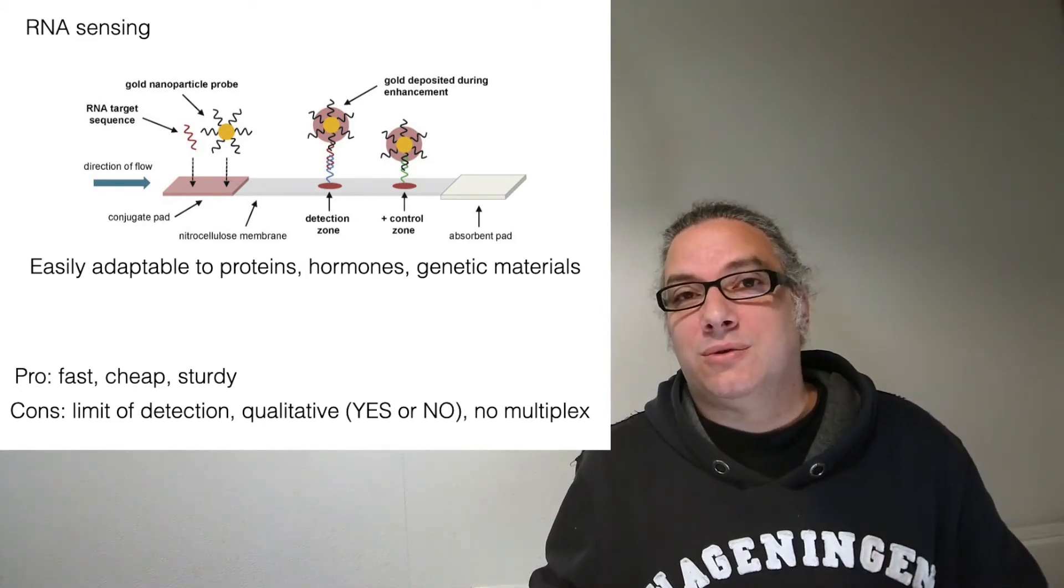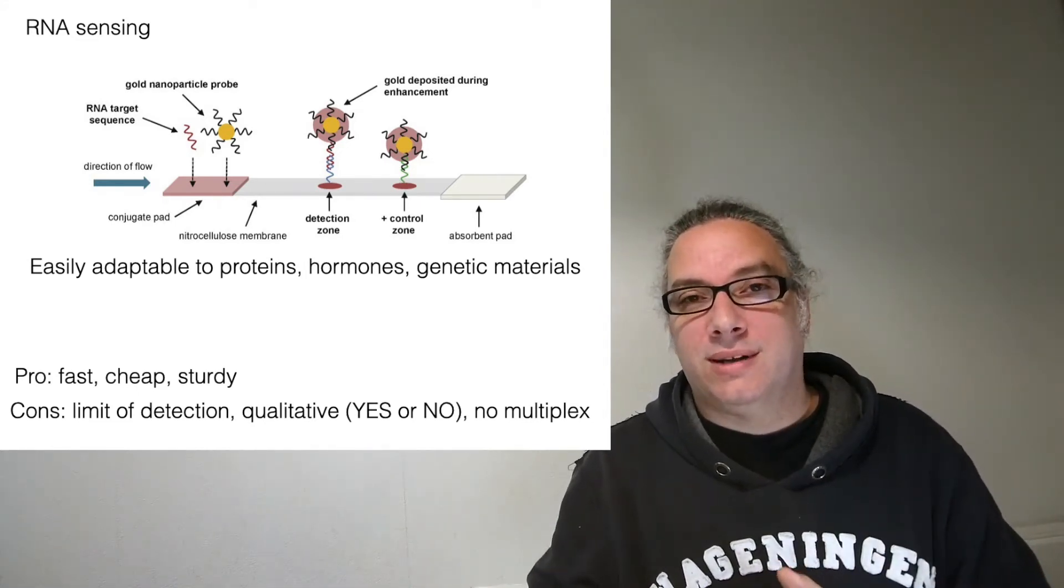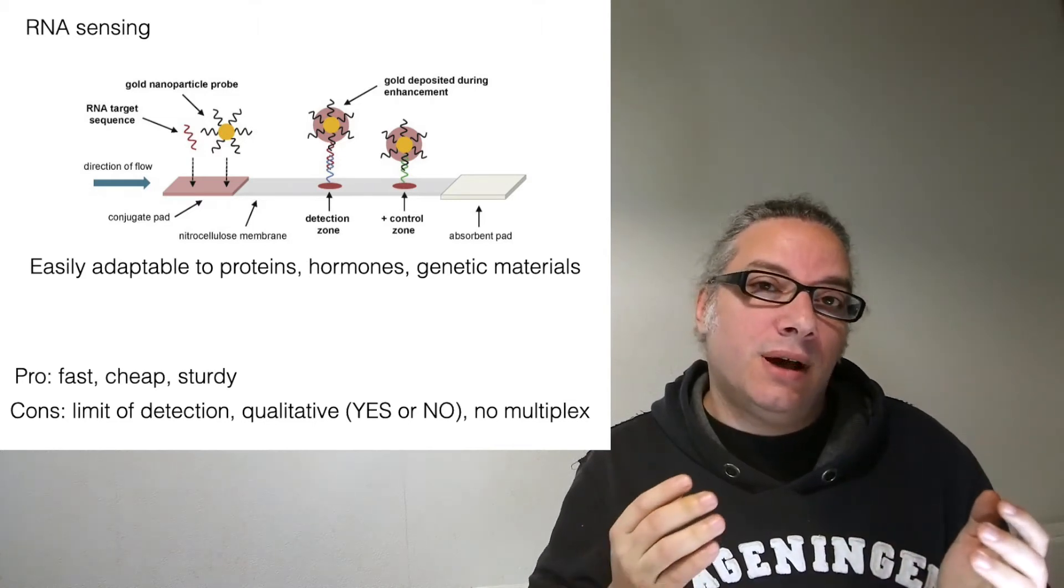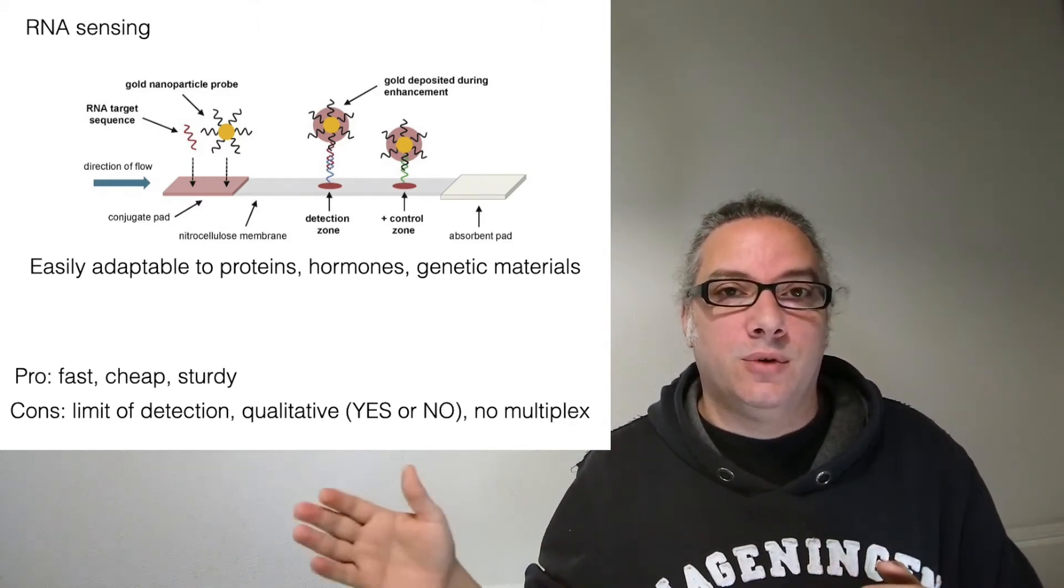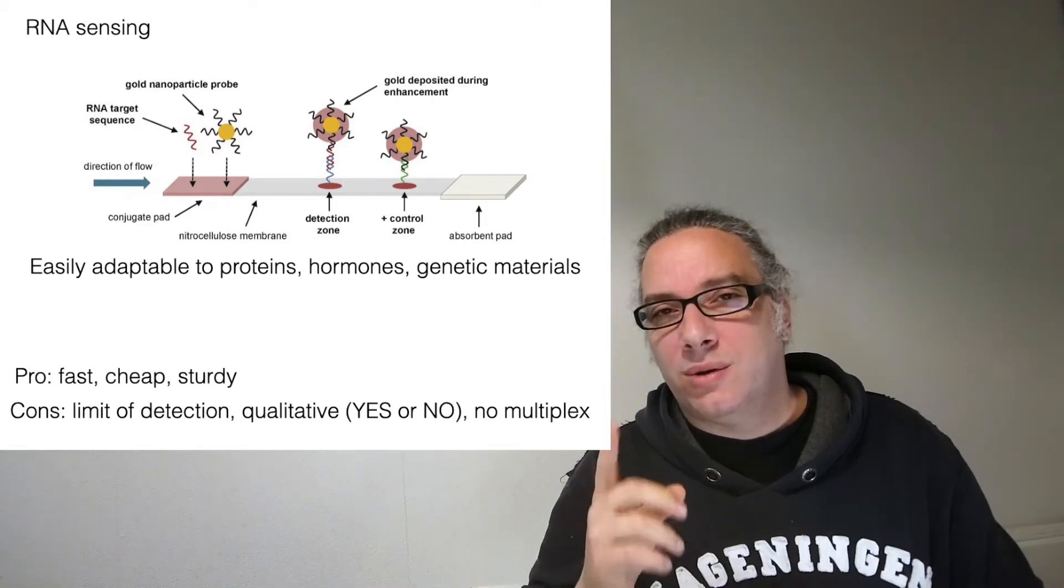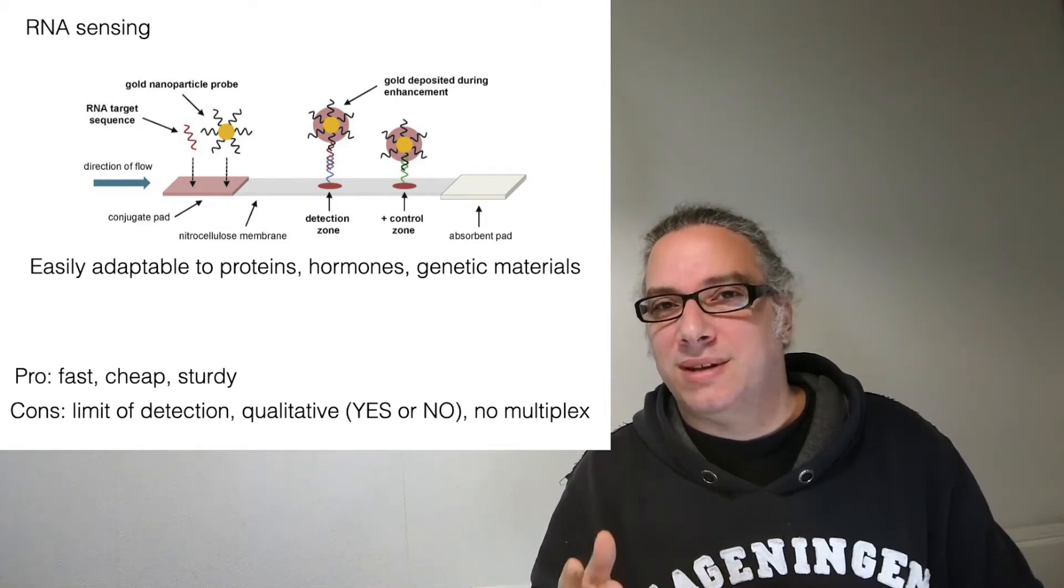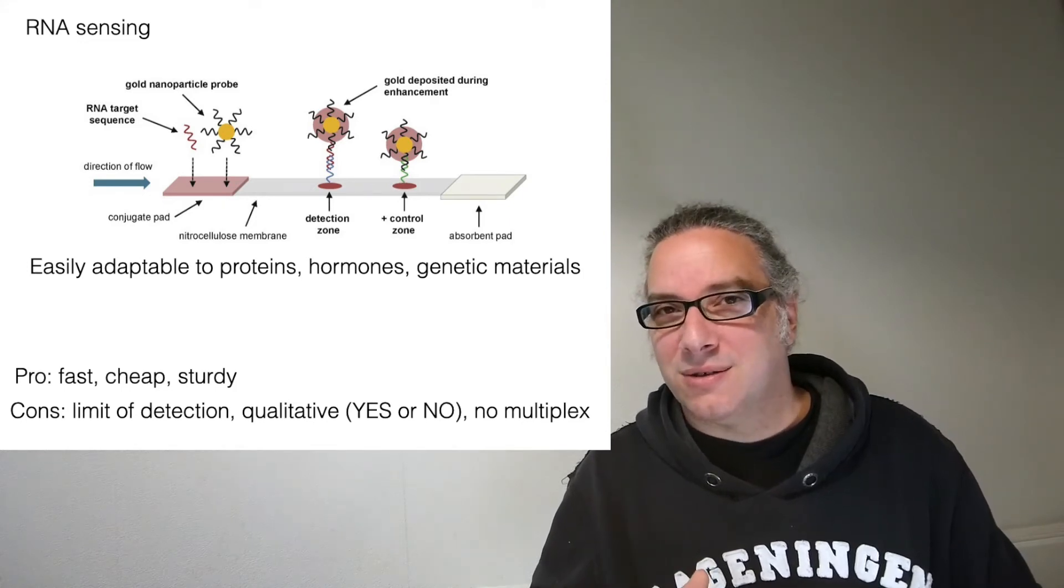Depending on how you want to use it, it's perfect to have only a qualitative sensor. I cannot do multiplex, so with only one drop it's difficult to make multiplexing on paper. This is not completely true, and we'll see at the end why. I can do multiplex on paper.